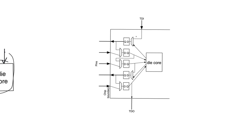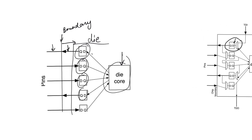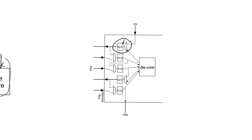The first step is to modify every register into a boundary scan register. All of the registers will have an additional multiplexer. This multiplexer will either feed the D input of the register with the normal input we normally observe, or a test input, which we call the test data input. The first pin here is an output pin — it normally accepts its input D from the die core. So that would be one of the inputs to the additional multiplexer. The other input to the multiplexer is an additional pin to the chip called TDI.